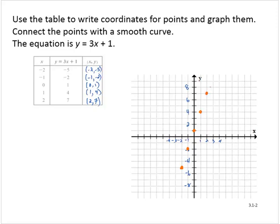Now it's just to connect the points with a smooth curve. But in fact, these points appear to be collinear. So in other words, it looks like they're on a line. So I'm going to actually use a straight edge and draw the line through those points.